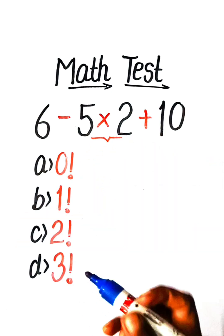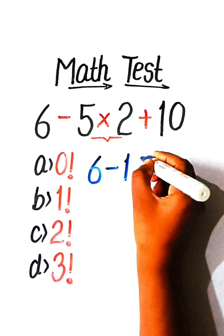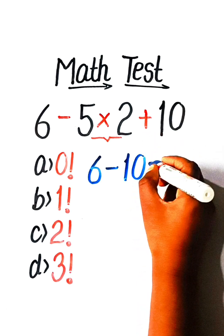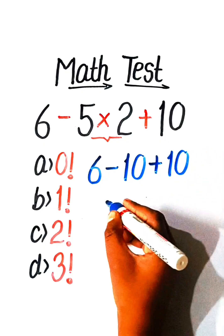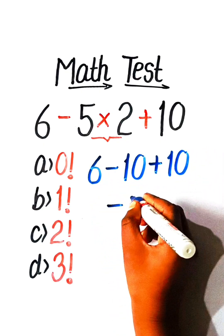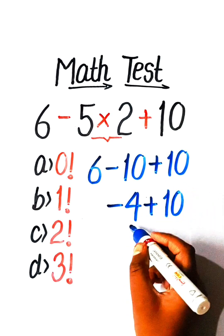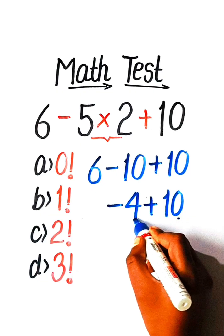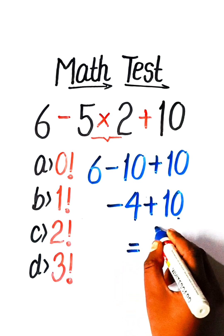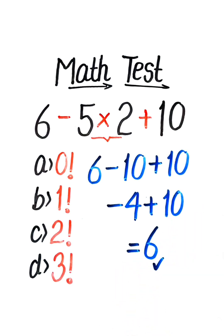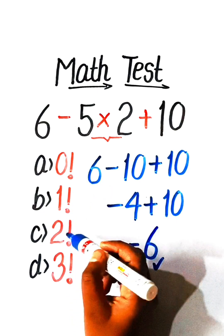We will write here 6 minus 5 twos are 10 plus 10. So 6 minus 10 plus 10 — with the greater number having a plus sign — equals 6. So 6 will be our correct answer, but in options we have all options in factorial form.